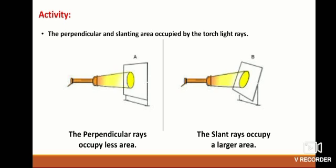Now B, the slant rays occupy a larger area. The part where the rays occupy a larger area receives less sunlight and so less heat.